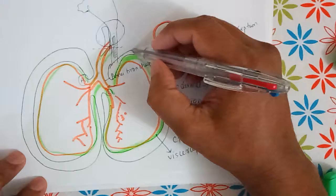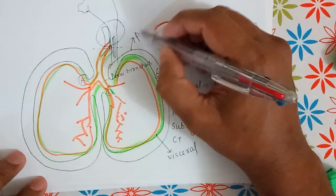The part of the pleura which is away from the lung is called the parietal pleura.